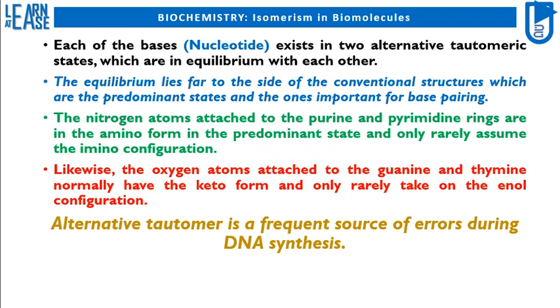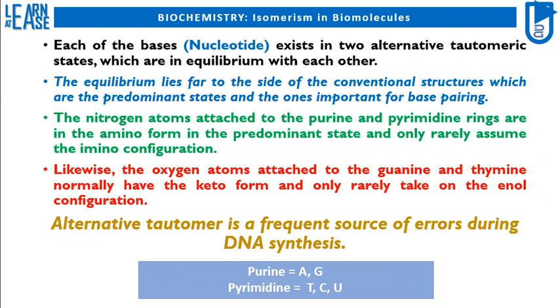Alternative tautomers are a frequent source of errors during DNA synthesis. Purine nucleotides are adenine and guanine, while pyrimidine nucleotides are thymine, cytosine, and uracil.